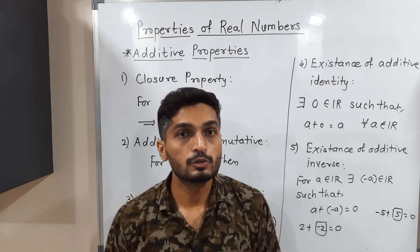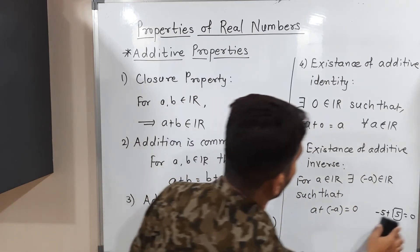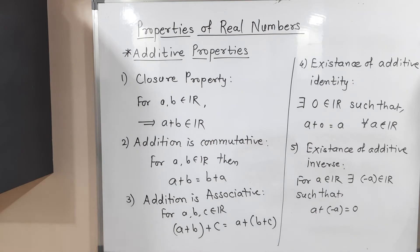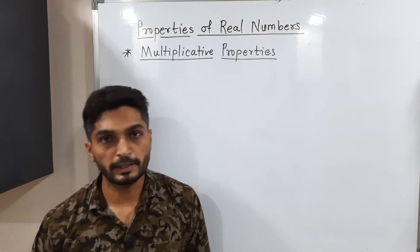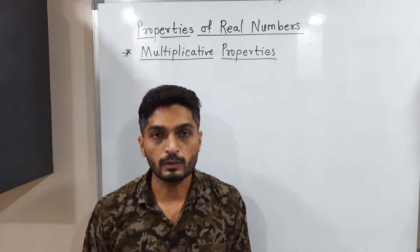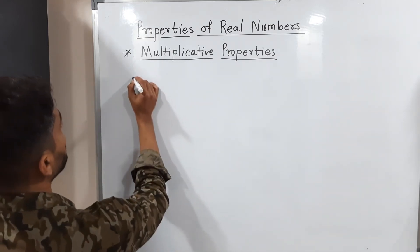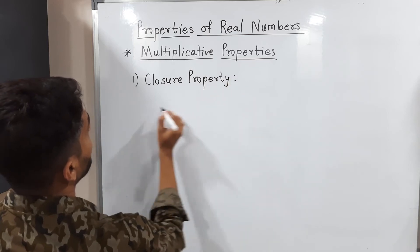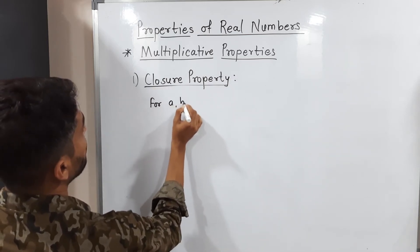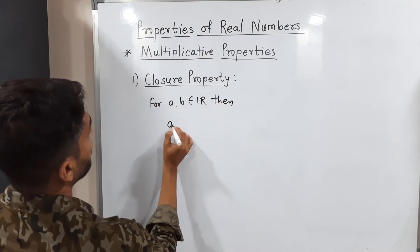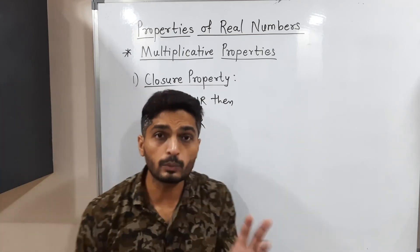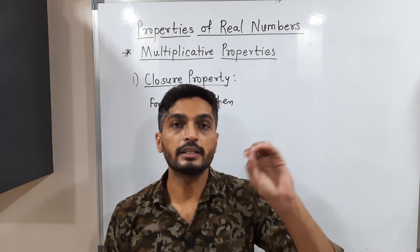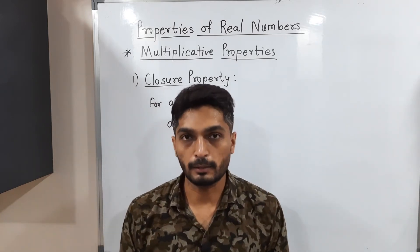So we have seen five additive properties: closure property, commutative property, associative property, existence of additive identity (zero), and additive inverse. Now let us discuss multiplicative properties. The first is closure property: if you take any two real numbers a, b belonging to R, then a into b is again in R. For example, 2 into 3 is 6, which is a real number.